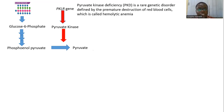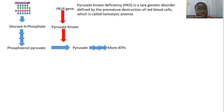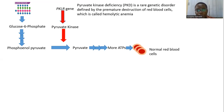Pyruvate also through several pathways leads to production of more ATPs. These ATPs are actually needed by the red blood cells for their normal functioning, because red blood cells are needed in the body to move some vital substances around the body.